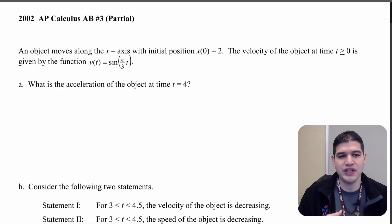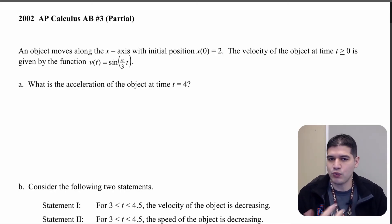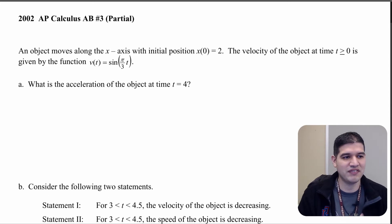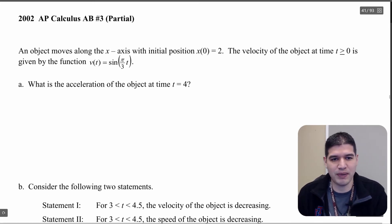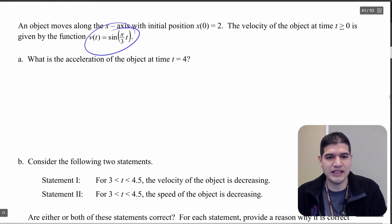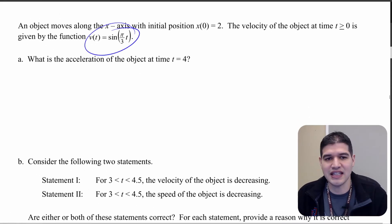So here we have an object that moves along the x-axis, which is going to be something that we're normally going to be looking at. And the velocity of the object when t is greater than or equal to 0 is given by this function. So notice here what we want to notice is that we're given the velocity function.